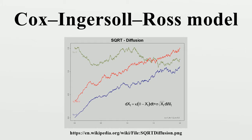More generally, when the rate is at a low level, the standard deviation also becomes very small, which dampens the effect of the random shock on the rate. Consequently, when the rate gets close to zero, its evolution becomes dominated by the drift factor, which pushes the rate upwards. This process can be defined as a sum of squared Ornstein-Uhlenbeck processes.